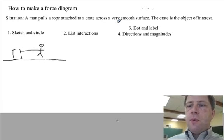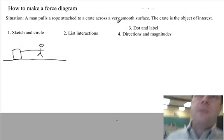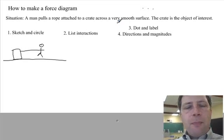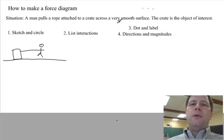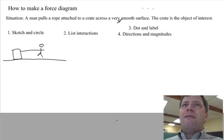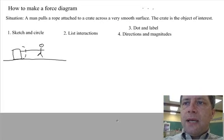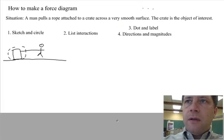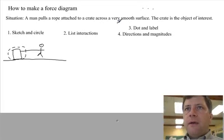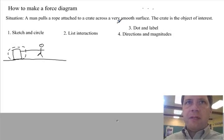Now, it's important that you circle the object of interest because we're separating the whole universe into the object of interest and everything else. So carefully circle it. I usually make a dotted line when I do this circle. There it is. There's our crate. That's the object of interest.